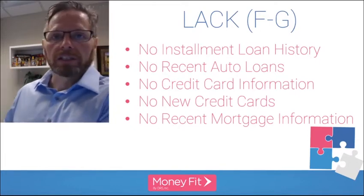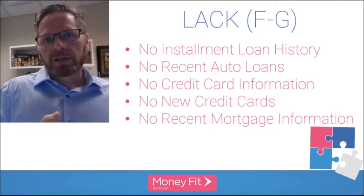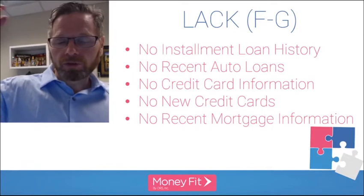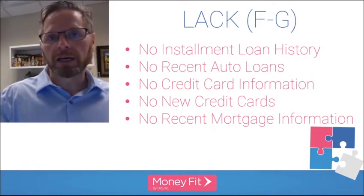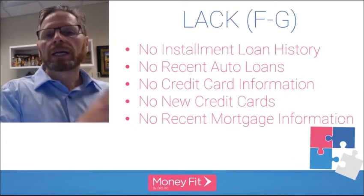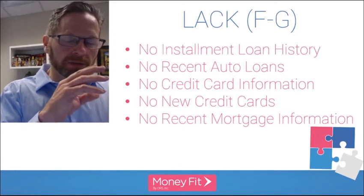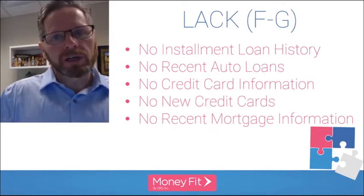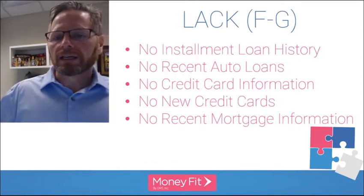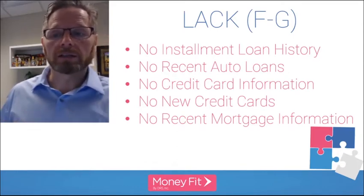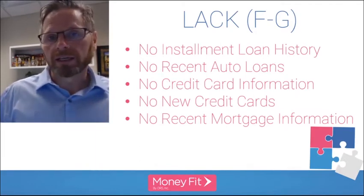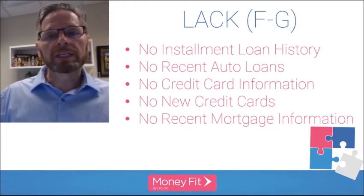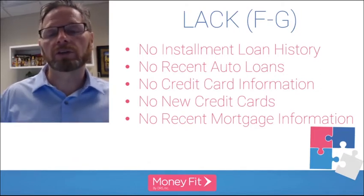New activity on more recently established credit cards is a better predictor than activity on cards you've had for years. So if you haven't had a new account, FICO is saying it can still generate a score, but without new credit cards it doesn't have as much information to make the score as reliable as possible. The same applies to lacking recent mortgage information. It doesn't mean you must apply for new cards — you can still have excellent credit and qualify for the best lender terms without focusing on every single one of these codes.